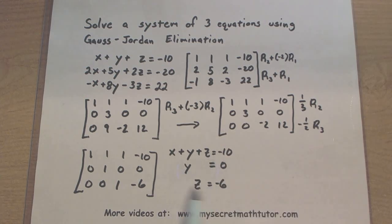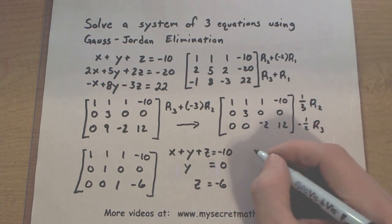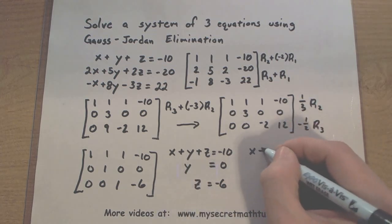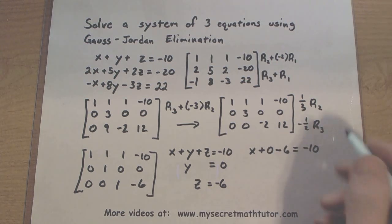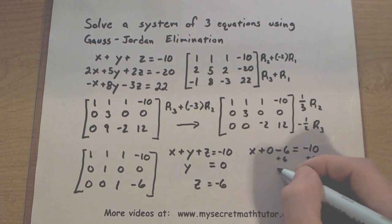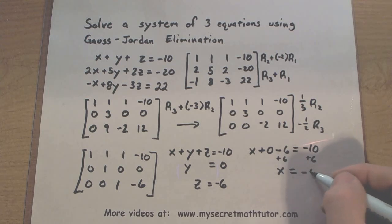So I have 2 out of my 3 variables at this point. Let's go ahead and take these and substitute them into the first. So x plus 0 minus 6 equals negative 10. So you add 6 to both sides, so x must equal a negative 4.